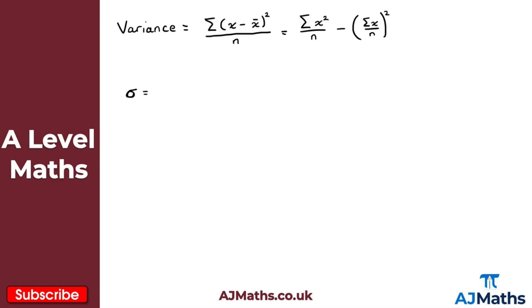Lowercase sigma represents the standard deviation of a data set, and it is calculated as the square root of the variance. Since you are given the formula for the standard deviation, you would need to square it if you needed the variance. So the variance is represented as sigma squared.